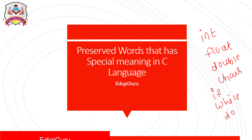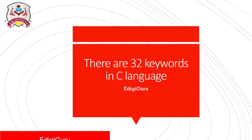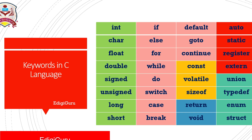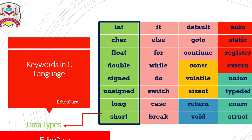int, float, double, char, if, while, do — these are a few examples of keywords. In C language, there are 32 keywords. Those 32 keywords are divided in a structured way so that you can easily remember and memorize them. The first 8 keywords are data types.